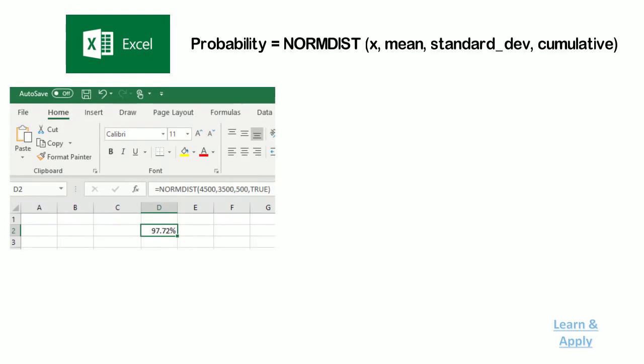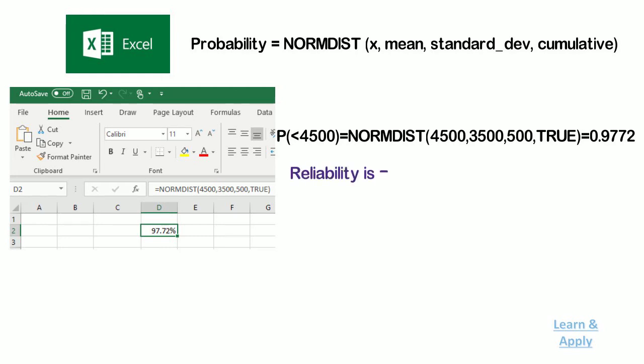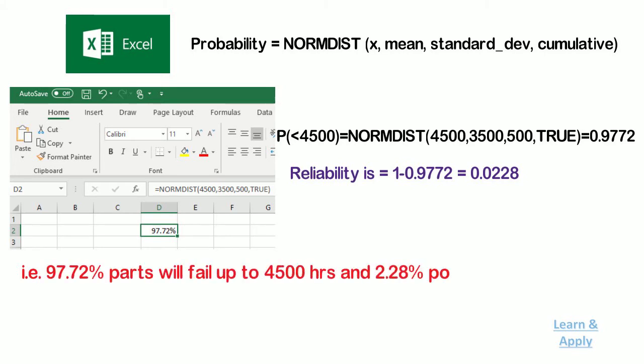That is, probability for less than 4500 hours equals NORMDIST(4500, 3500, 500, true), which equals 0.9772. And reliability equals 1 minus 0.9772, which equals 0.0228. That is, 97.72% of parts will fail up to 4500 hours and 2.28% of the population will survive.